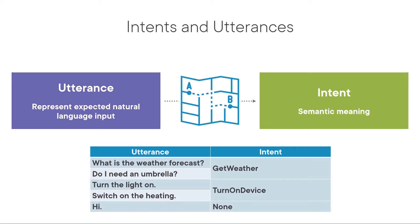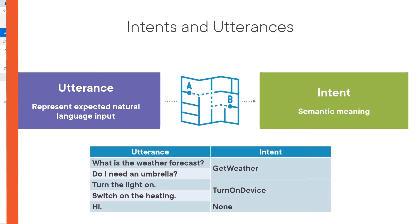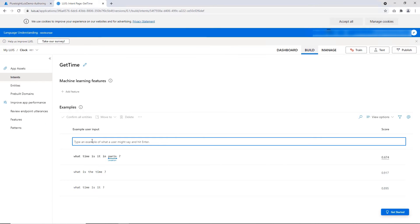Developing an efficient AI-capable application on a global scale requires leveraging first-class tools. LUIS is one of those because it will allow you to create and deploy an AI model capable of extracting intents from text or speech.